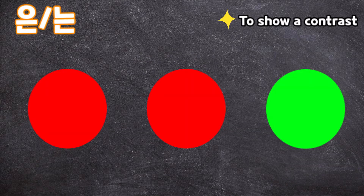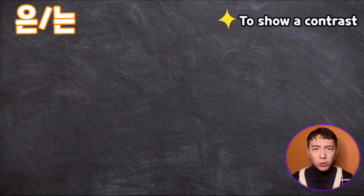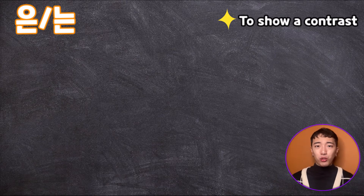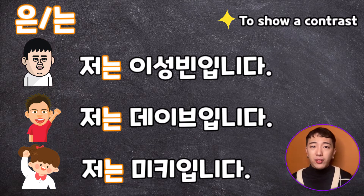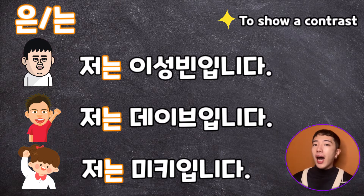Here are three circles — two red circles and one green circle. 이 원은 초록색이에요. This circle is green. The green circle contrasts with the other red circles. If you say something in contrast with others, it can be the new topic. It's the same when you meet new people at a meeting. 저는 이성빈입니다. 저는 데이브입니다. 저는 미키입니다. Everyone used 는 because they all contrast with others, and at the same time, themselves are the new topic.